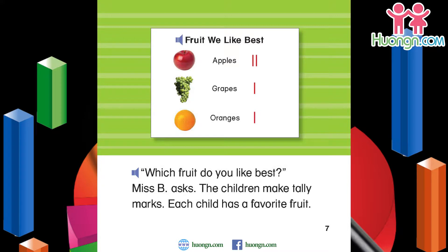Which fruit do you like best? Miss B asks. The children make tally marks. Each child has a favorite fruit. Apples: two. Grapes: one. Oranges: one.